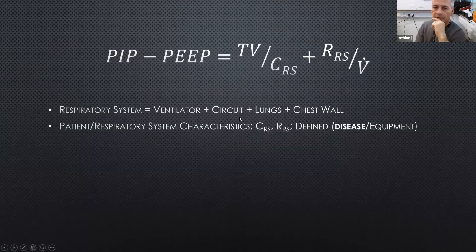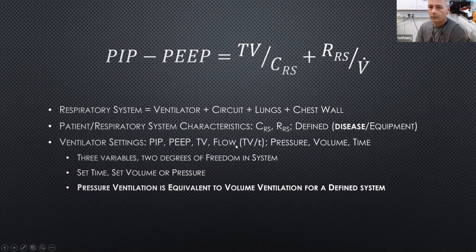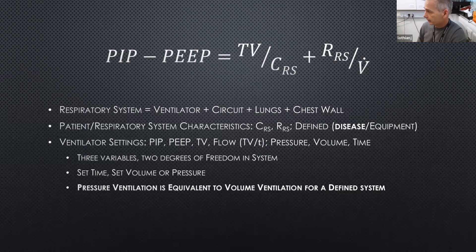So the equation becomes: PIP minus PEEP equals tidal volume divided by compliance, plus resistance times flow. The patient's respiratory system characteristics - compliance and resistance - are defined by the patient's disease; you can't change them by twiddling dials, only by fixing what's wrong with the patient. The ventilator settings are PIP, PEEP, tidal volume, and flow (which is tidal volume divided by time). There are really only three variables: pressure, volume, and time - with two degrees of freedom. You always set time, then set either volume or pressure.